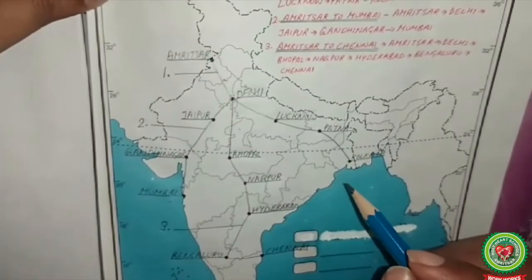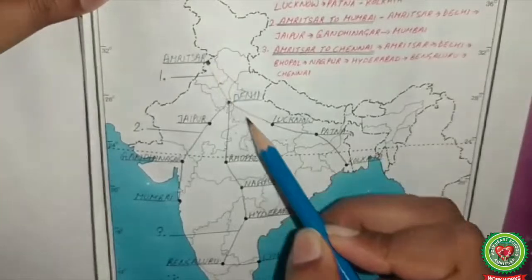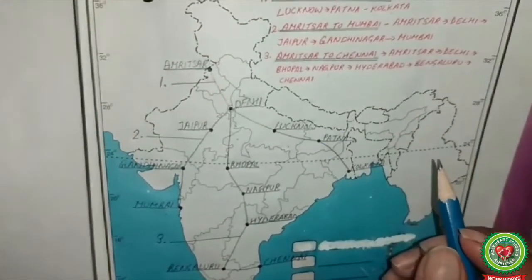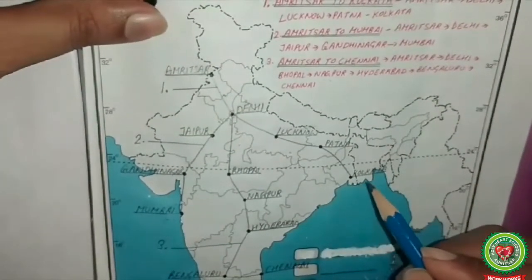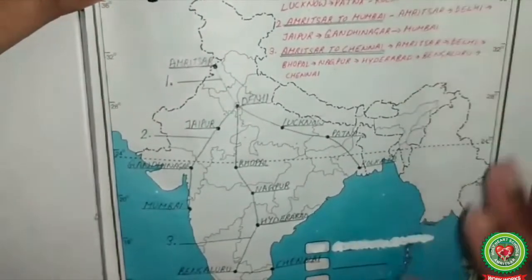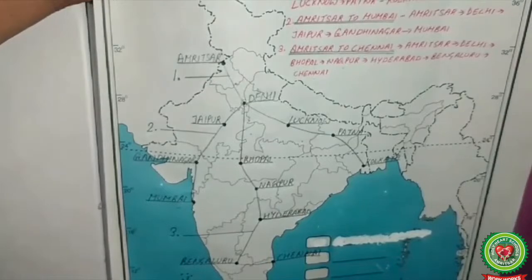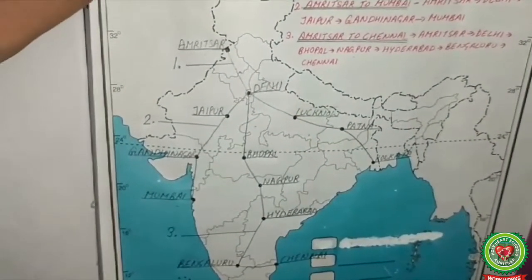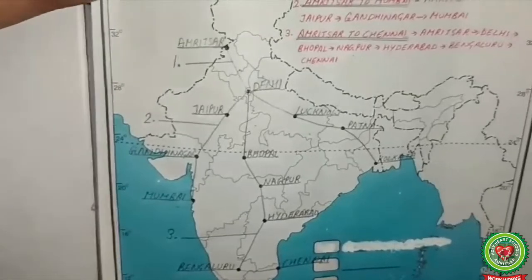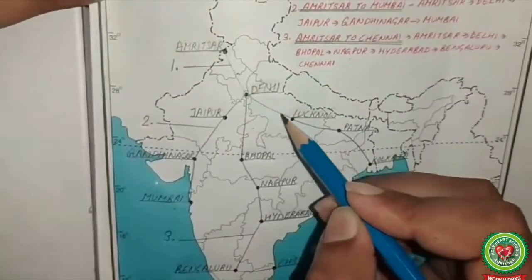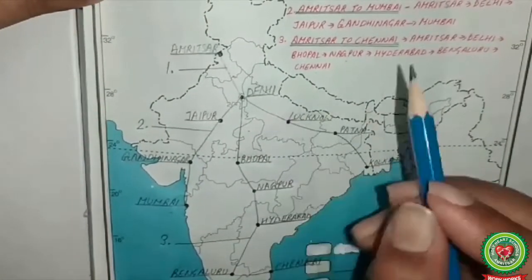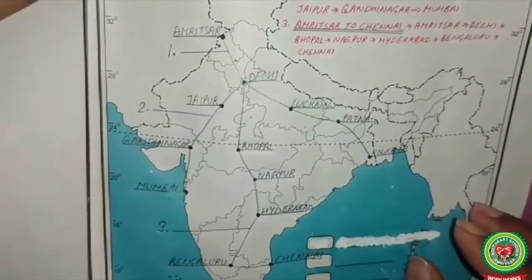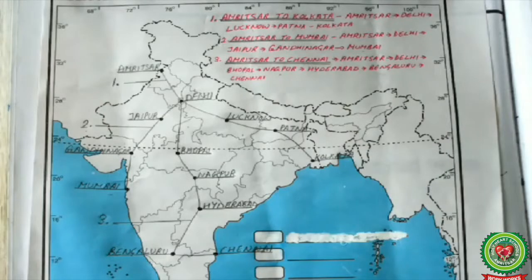This map is very important. Don't forget that the Amritsar to Kolkata route is the GT Road. To make the map more beautiful, you can draw the roads with sketch pens. I hope the map is clear to you. Draw it with pencil first — draw the lines with pencil, then write city names in capital letters.